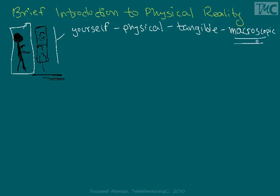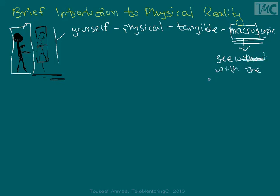Why macroscopic? Because the word macro means things that you can see — any object that is large enough for you to see with the unaided eye.